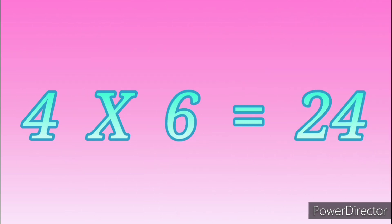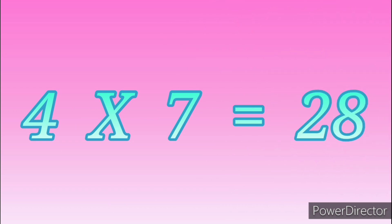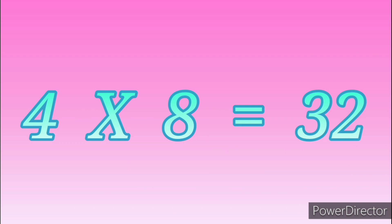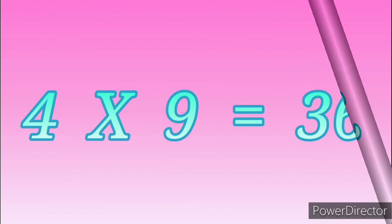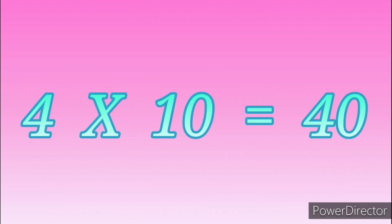Four sevens are twenty-eight. Four eights are thirty-two. Four nines are thirty-six. Four tens are forty.